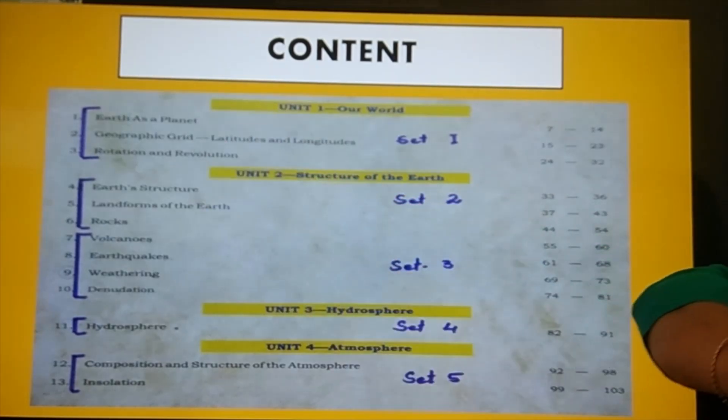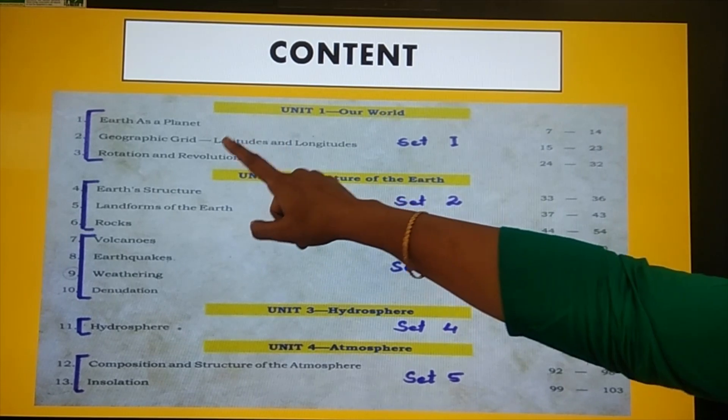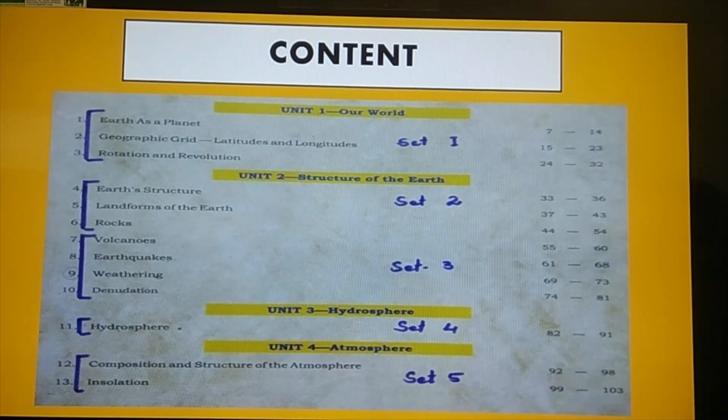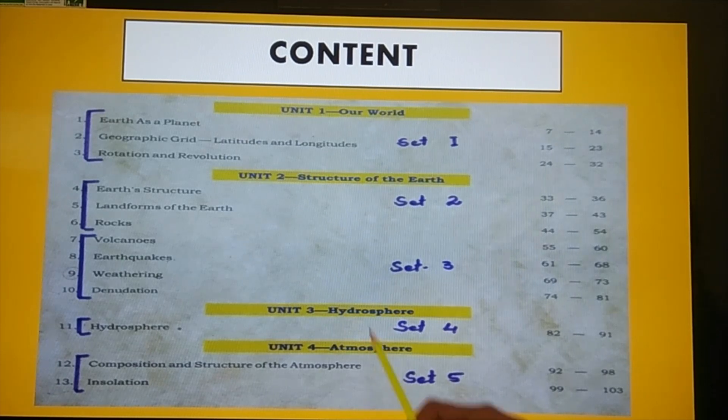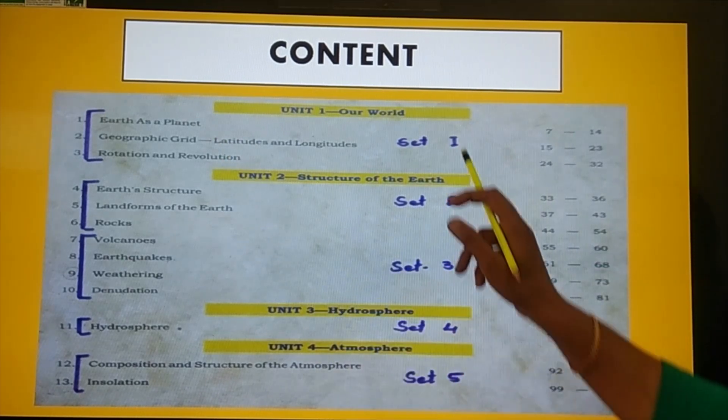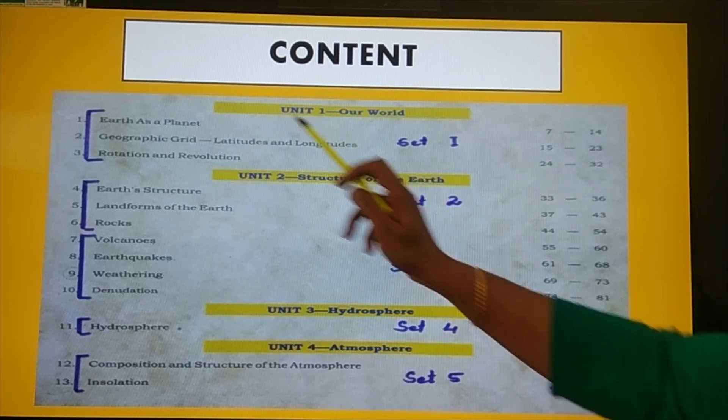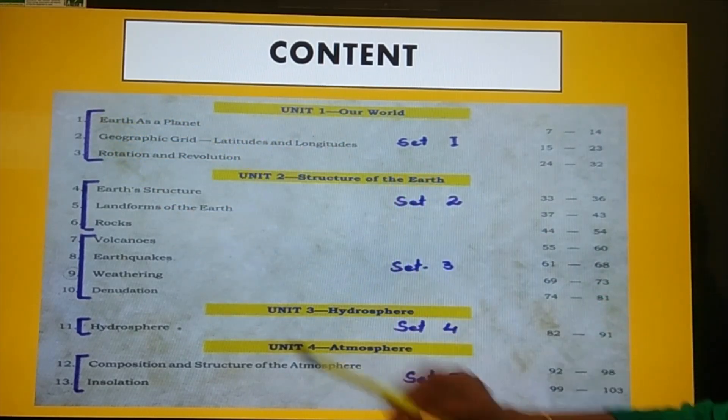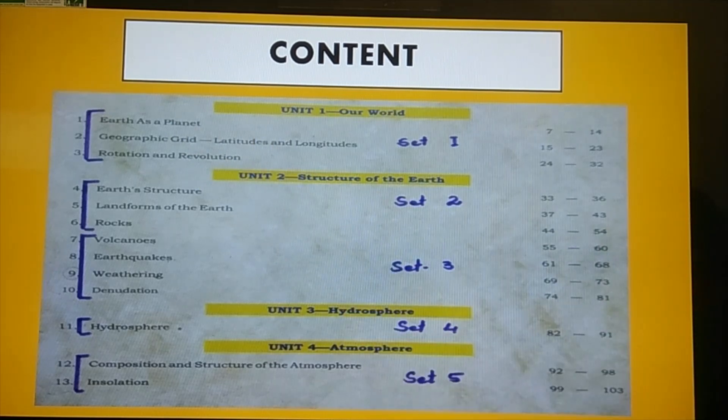First, in the first set there are 3 chapters: Earth as a planet, Geographical grid (Latitude and Longitude), and Rotation and Revolution. This is set one. So these 3 are based on a single theme and one question comes out of these 3 chapters.